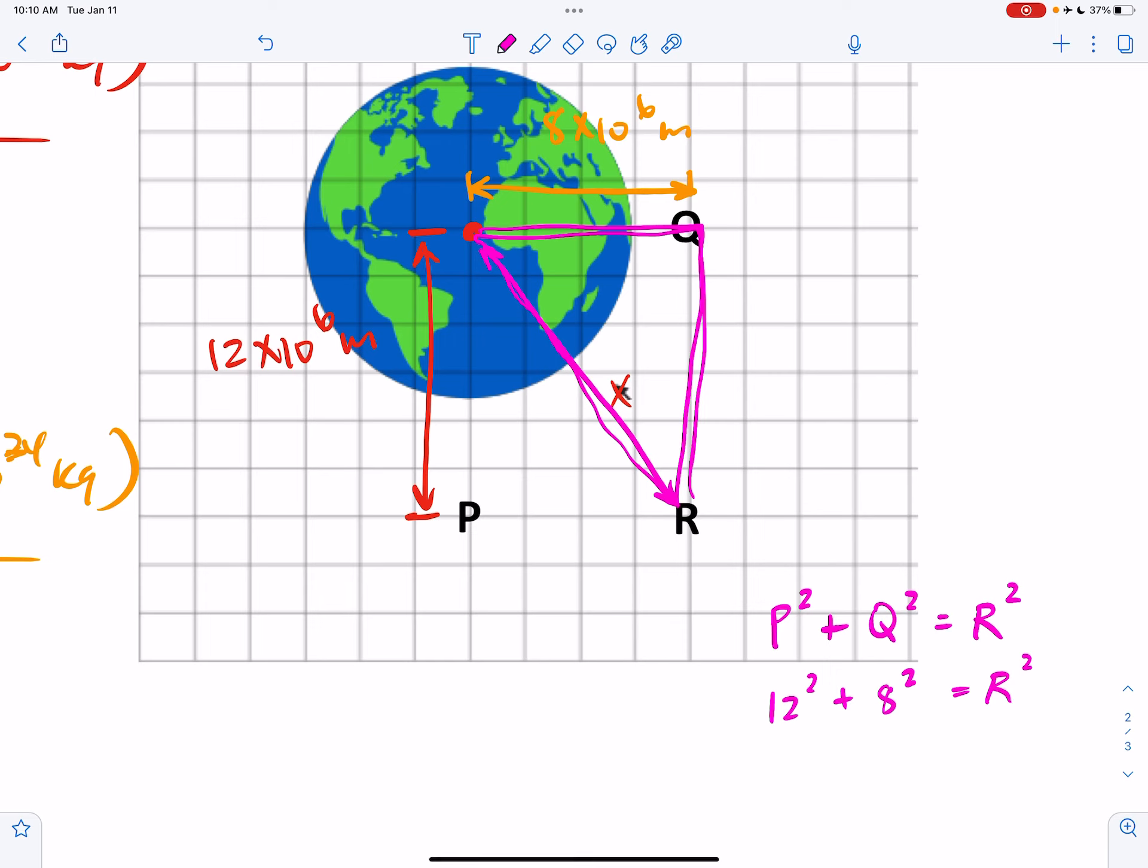So we can just do the math and figure out that the distance to R is 14.4 million meters. So now I can label that on my picture. 14.4 times 10 to the 6th meters.